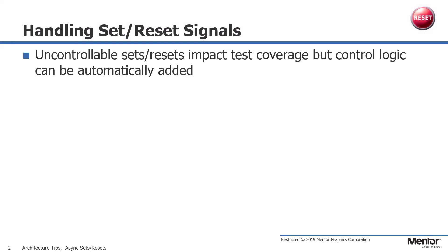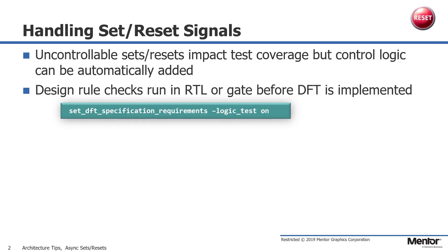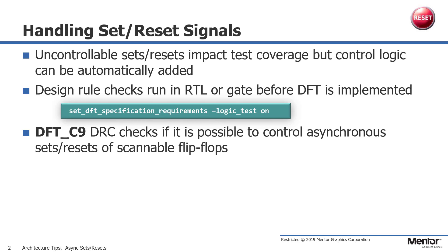Majority of designs today have some type of asynchronous sets or resets. Uncontrollable sets or resets may sometimes have a huge impact on test coverage. Tessent can aid in automatically adding the control logic, but first the asynchronous sets or resets need to be identified. They can be identified using RTL or gate level design by using the command set_DFT_specification_requirements -logic_test on. The pre-DFT DRC DFT_C9 performs checks to identify if it is possible to control asynchronous sets or resets of scannable flops in the design.